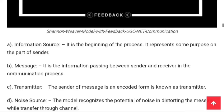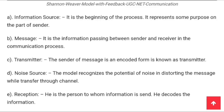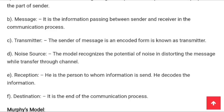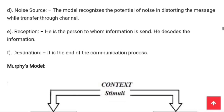The Shannon-Weaver model includes the following components: the information source, the message, and the transmitter, which is the encoder. The noise source recognizes the potential of noise in distorting the message while transferring through a channel — there can be problems during transmission. The receiver is the person who receives the information, and the destination is the endpoint of the communication process.